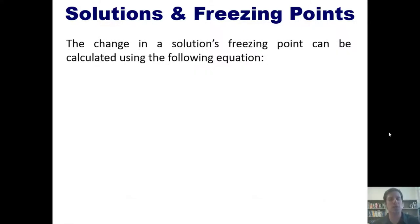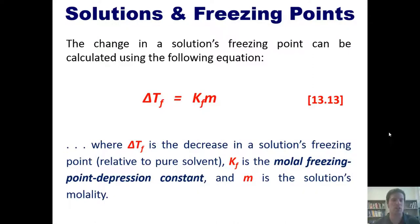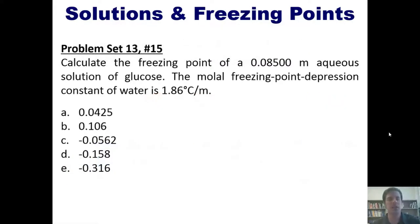So the change in the solution's freezing point can be calculated using the following equation, where ΔT_f is the decrease in the solution's freezing point relative to that of the pure solvent, K_f is the molal freezing point depression constant, and m is the solution's molality.